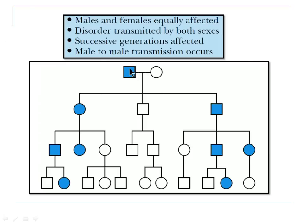In this pedigree we can see an affected father and a normal mother. The affected father is transmitting the disorder to siblings of either sex — both daughter and son. The daughter is then transmitting the disorder to both sexes as well. We can also see there is no skipping of generations; the disease is transmitted from one generation to the next. Male-to-male and female-to-female transmission also occur in autosomal dominant disorder.